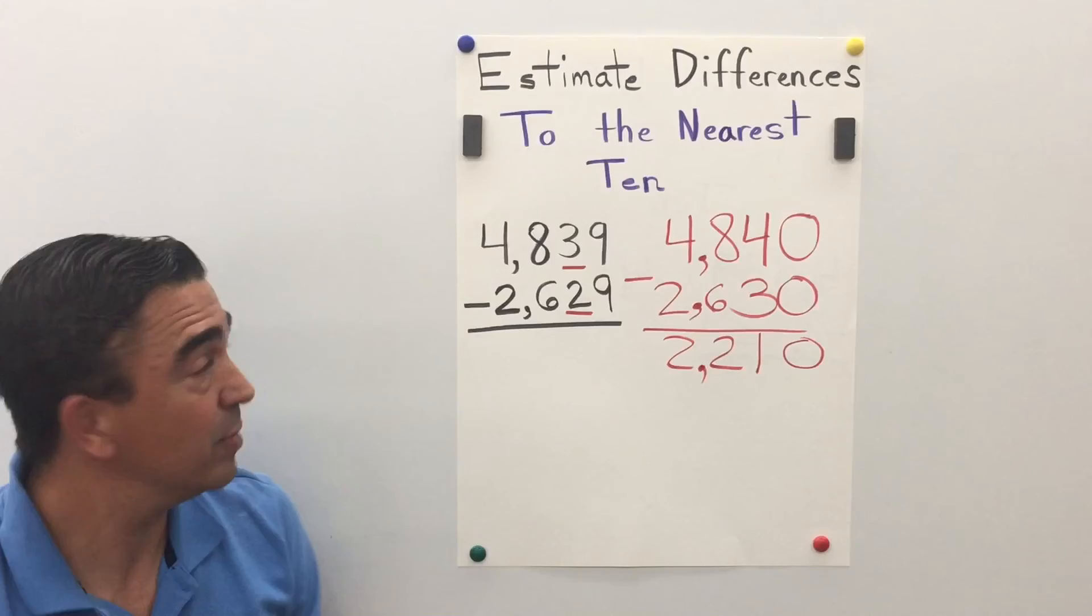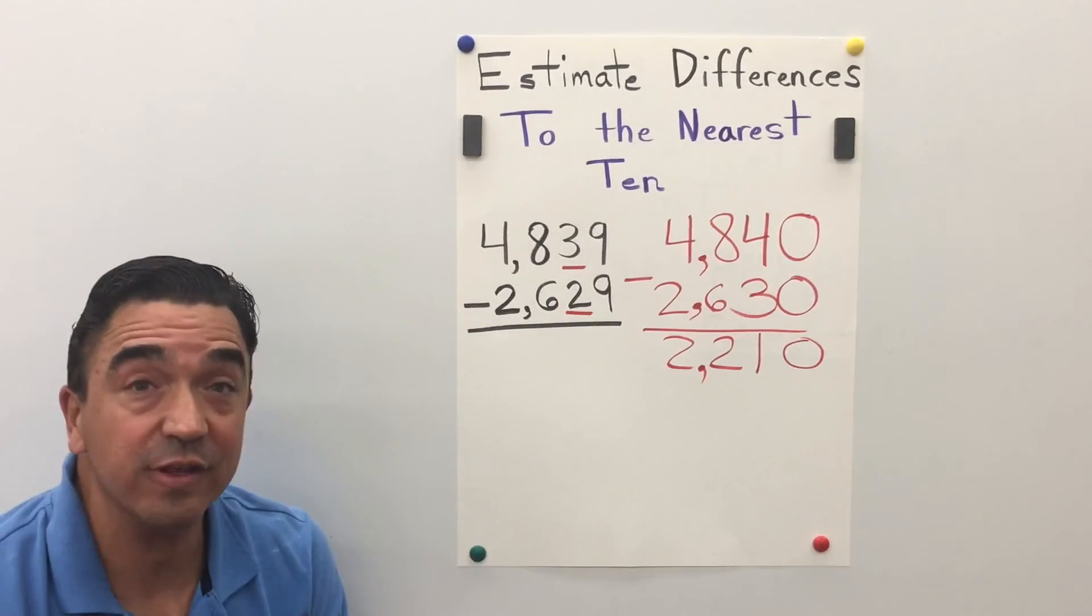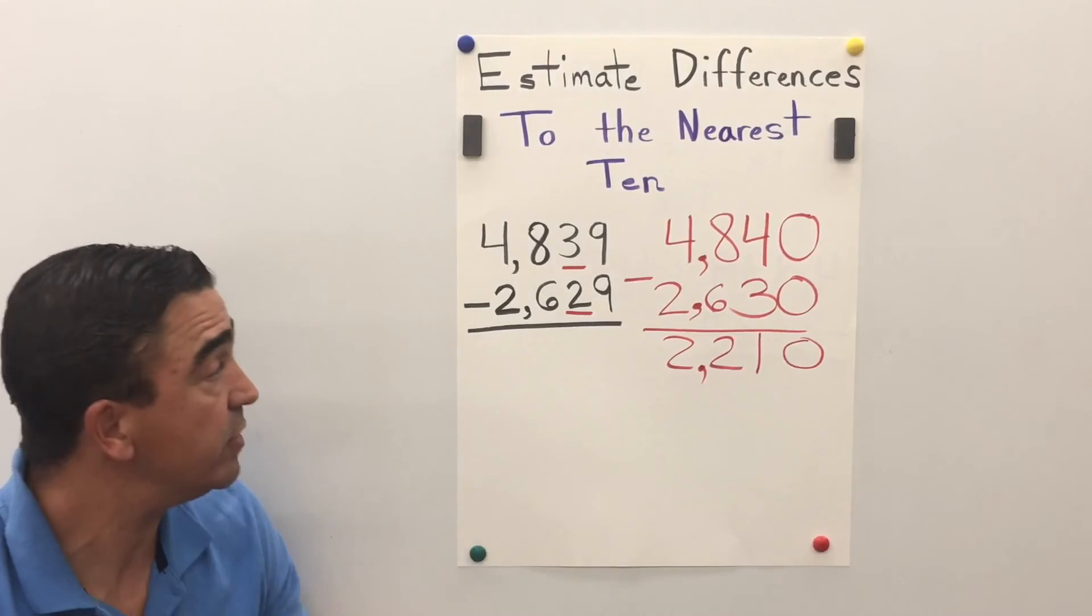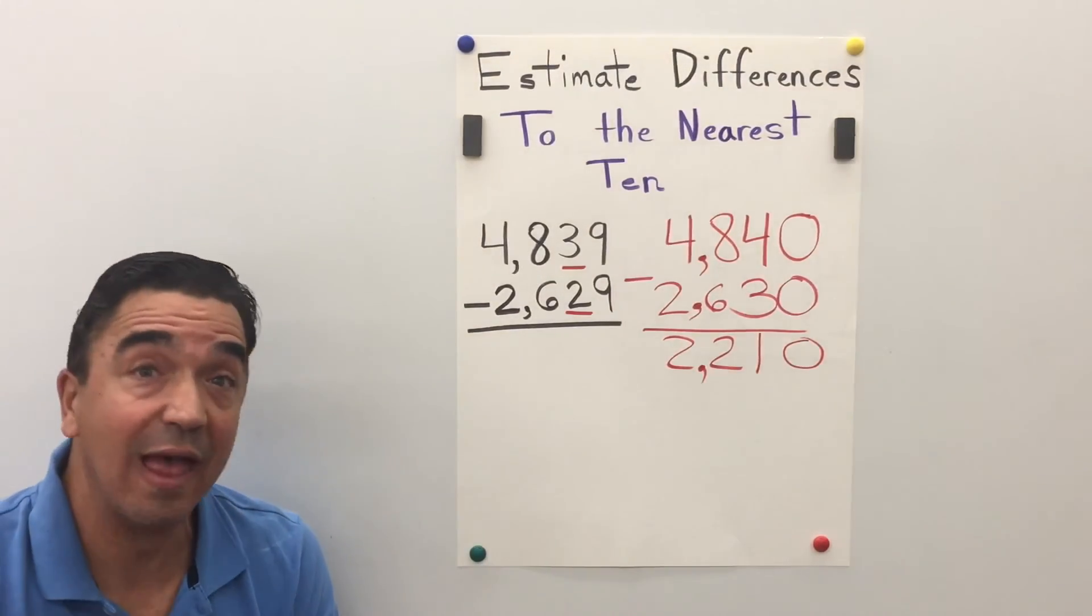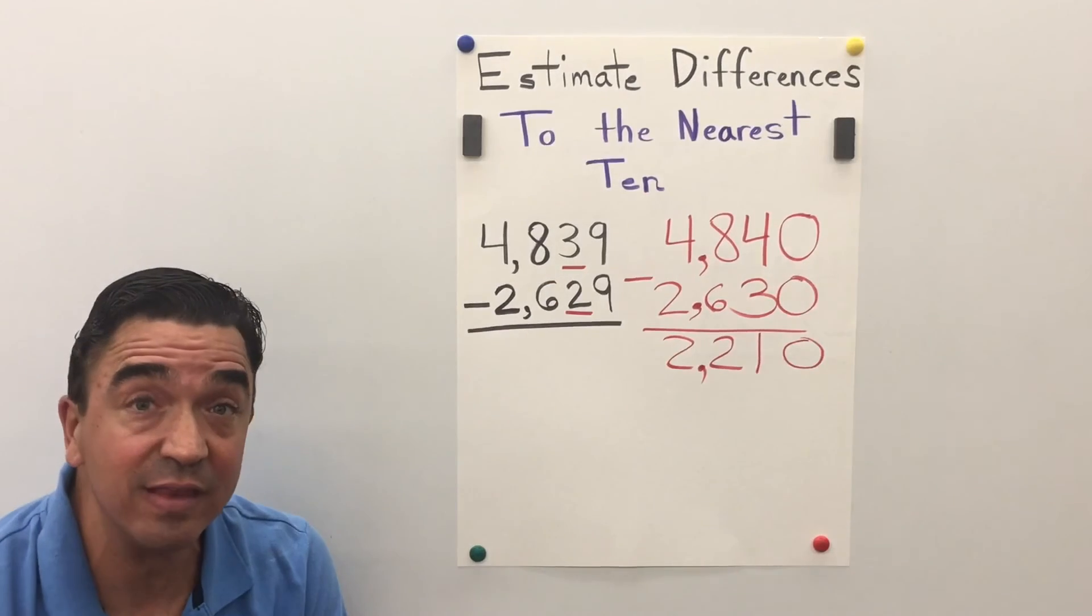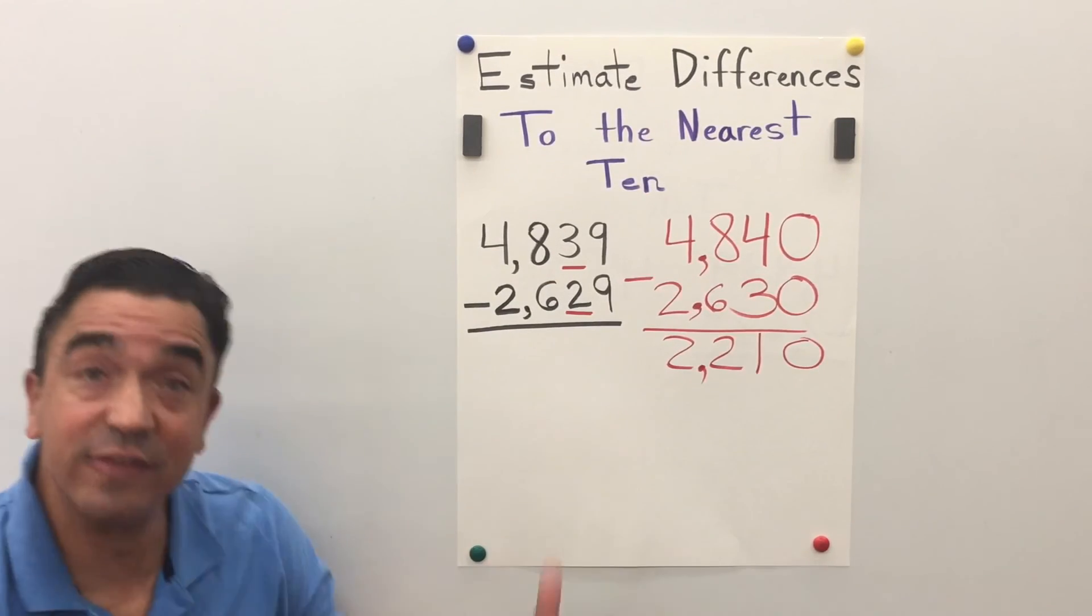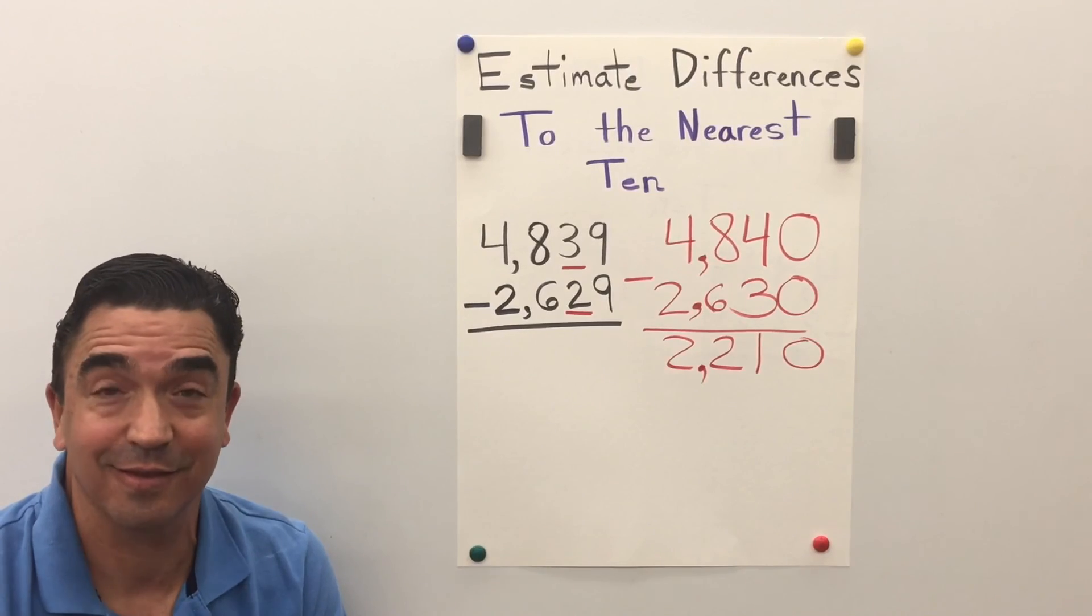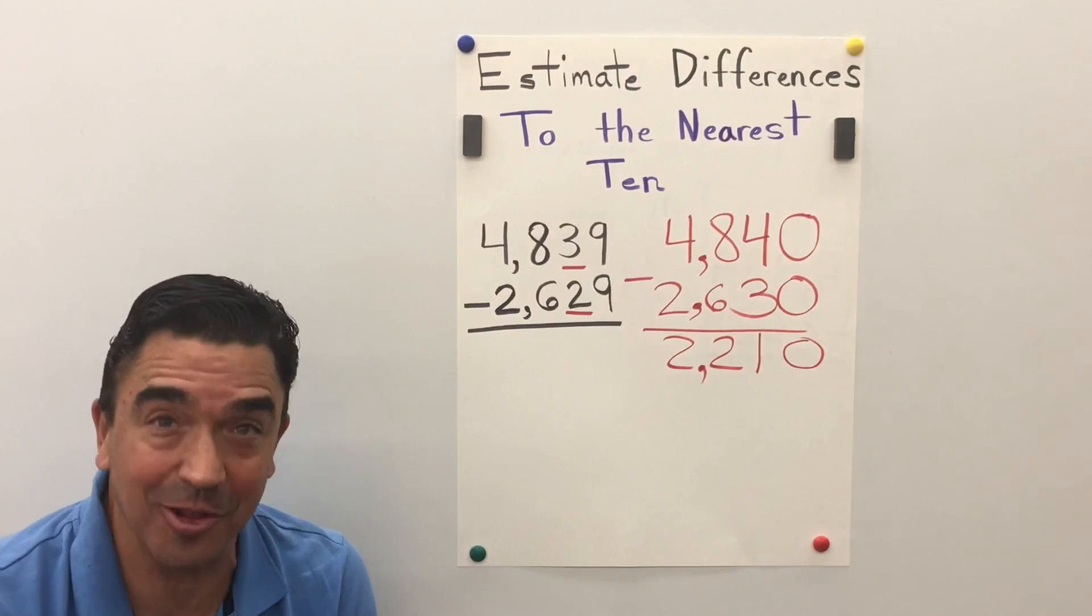So, 4,839 minus 2,629, when we estimate to the nearest ten, the difference is 2,210. And that concludes our lesson.